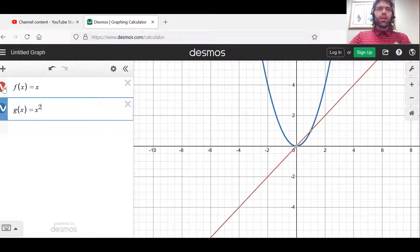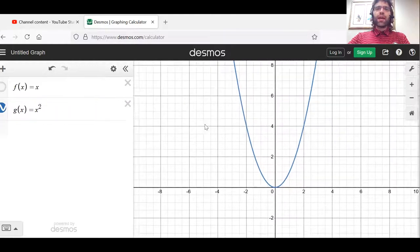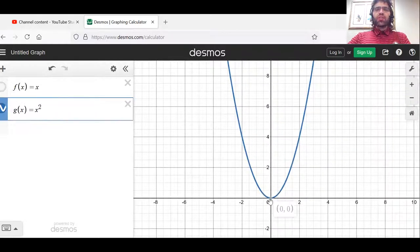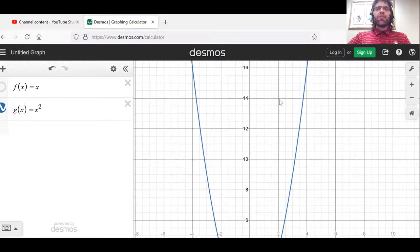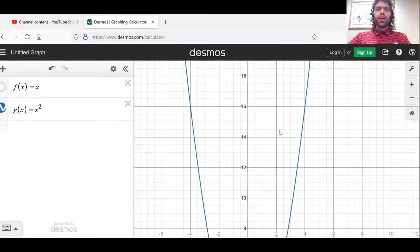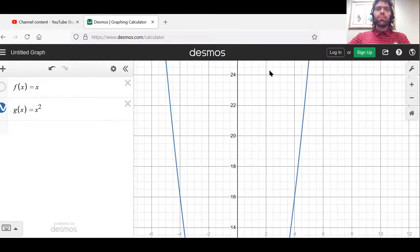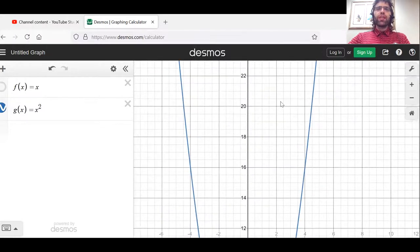The sum g of x equals x squared has a minimum value here, but it doesn't have a maximum value. It goes up to infinity.